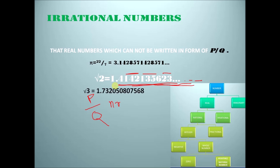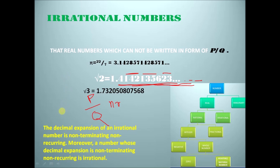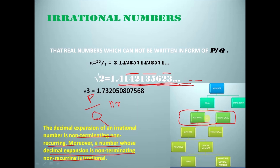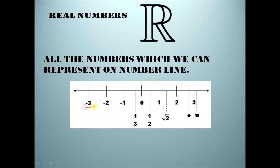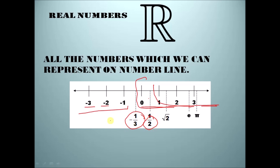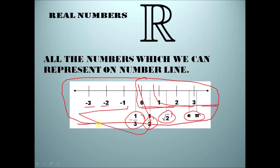Similarly root 3 is also irrational. Let me revise once more: the decimal expansion of an irrational number is non-terminating non-recurring, and any number whose decimal expansion is non-terminating non-recurring is an irrational number. Rational and irrational numbers together form real numbers, and all of them can be represented on the number line. Here we have negative integers, whole numbers, natural numbers, fractional numbers — all rational numbers — and e and pi as irrational numbers. All are represented on our number line, so these are real numbers.